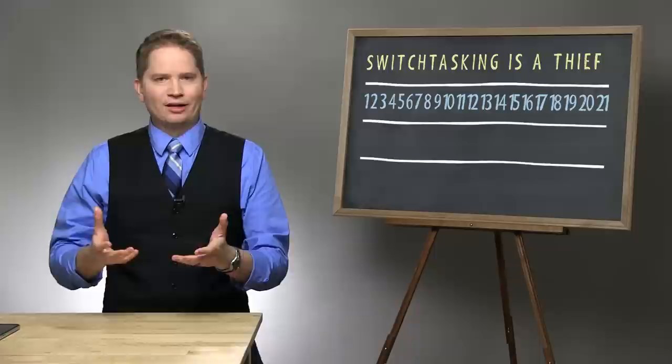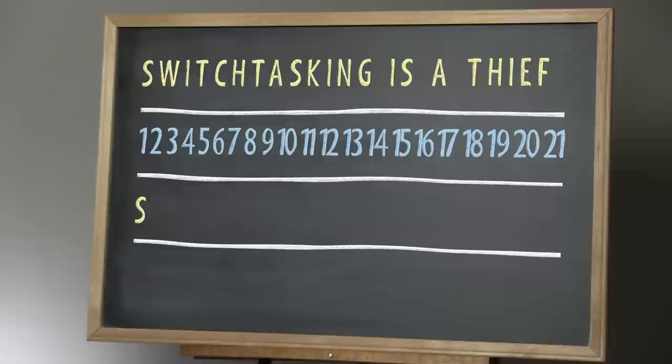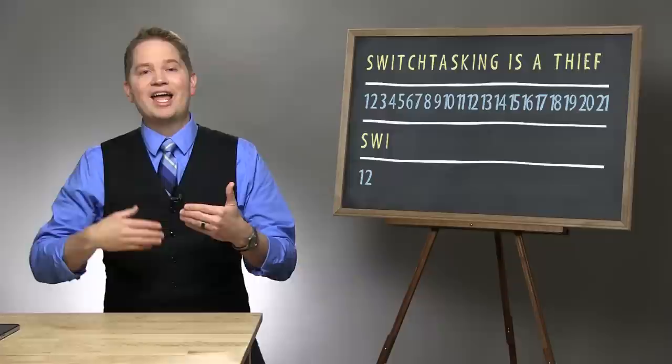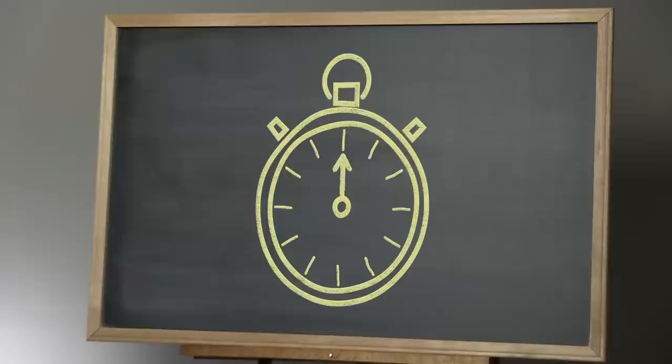Now we're going to do this again, but we're going to simulate switch tasking, which is trying to perform multiple active tasks at the same time — such as talking on the phone while answering email. You're going to, again, re-copy in the third row the phrase 'switch tasking is a thief.' But for every letter that you write, you're going to write a number in the fourth row. So you will write S, and then one, and then W, and then two, and so on until you complete the phrase and the numbers one through twenty-one. Get your paper and your pencil ready, and we're going to time this again. Get ready, get set, and go.